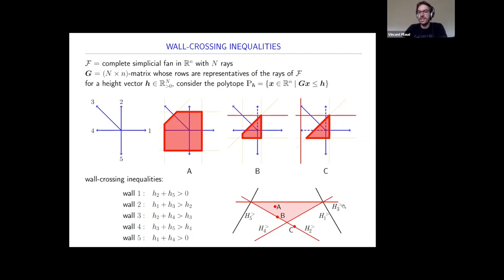I want you to observe two things. First, some inequalities are more important than others—the red ones—because the black ones are implied by the red ones. For example, the inequality for five is just the sum of the inequalities for two and three. Second, let's locate the three example polytopes: case A satisfies all wall-crossing inequalities, so its point is in the accepted region. Choice B almost satisfies them but the inequality for two is not fulfilled, placing it on that hyperplane. Choice C violates the wall-crossing inequality for four.